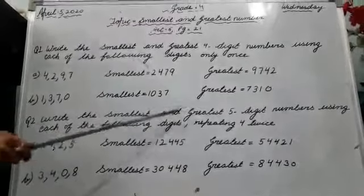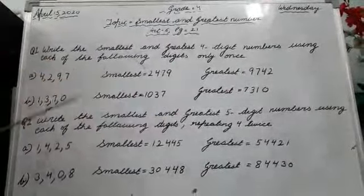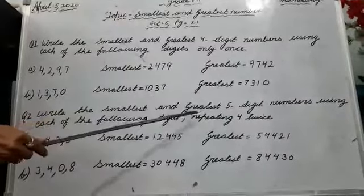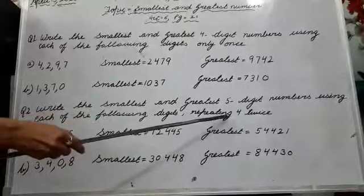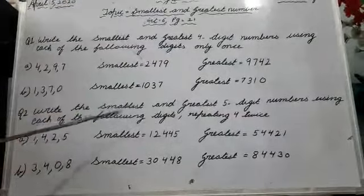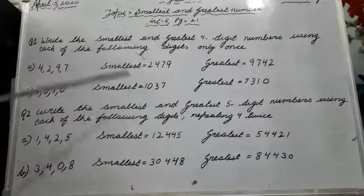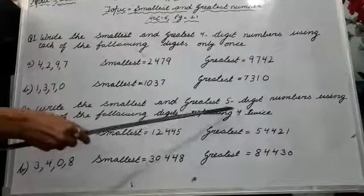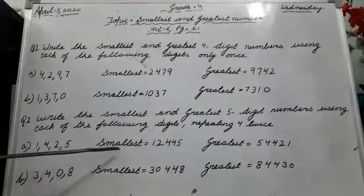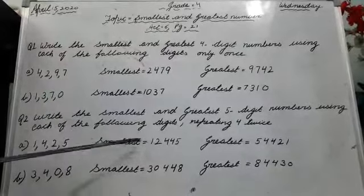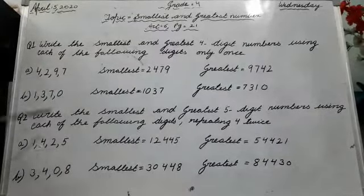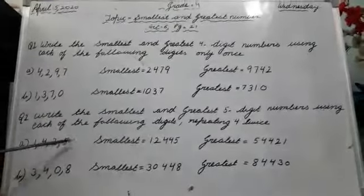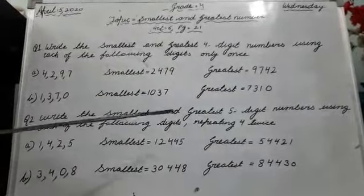Now question number 2: write the smallest and greatest five-digit numbers using each of the following digits. This time, repeating 4 twice — you have to write 4 two times. You are given 4 digits but need a 5-digit number, so 4 is repeated twice. For the smallest number: which is smallest? 1. Write 1 first, next write 2.